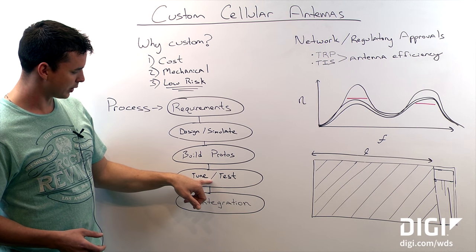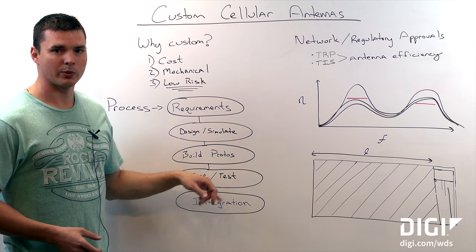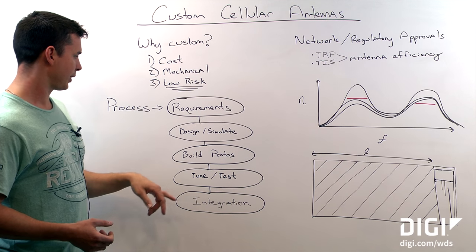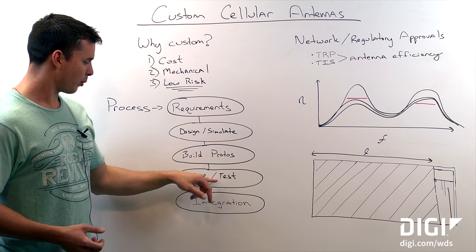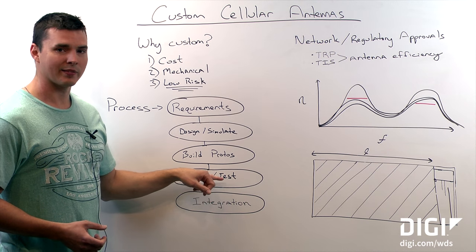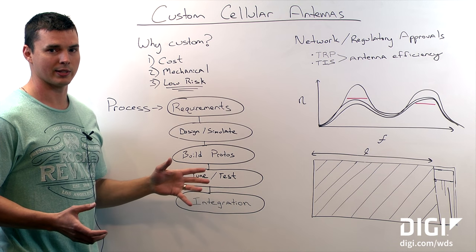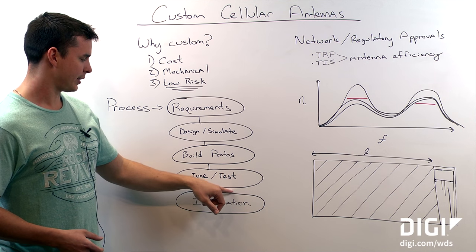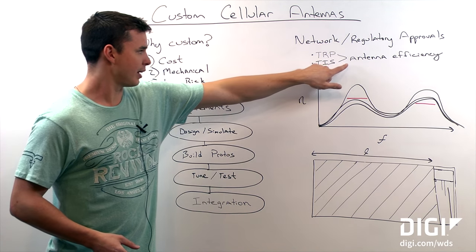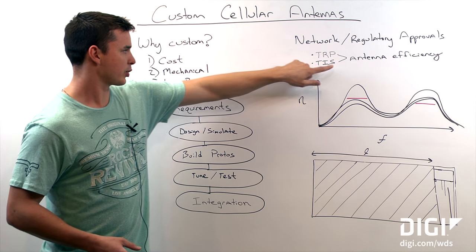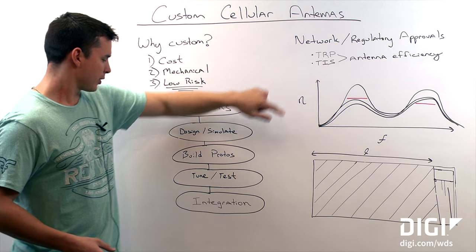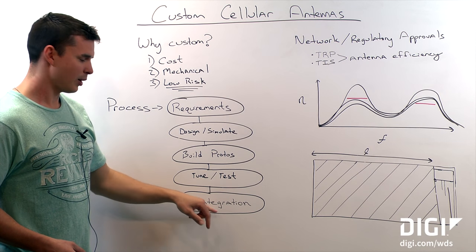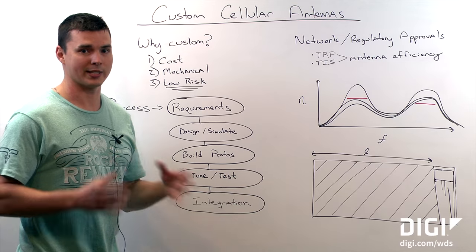We'll then tune and test those prototypes. During testing, we're looking at the gain, efficiency, and far-field pattern of the antenna, and comparing that to our original requirements. At this point, we're going to have a lot of confidence in the antenna and the mechanical design. We'll be able to finalize the industrial design knowing that our antenna requirements are going to meet the efficiency requirements extrapolated from the carrier requirements. So we can go into PCB assembly integration with confidence that we're not going to have to redesign the mechanicals.